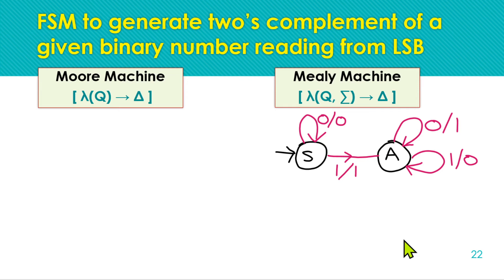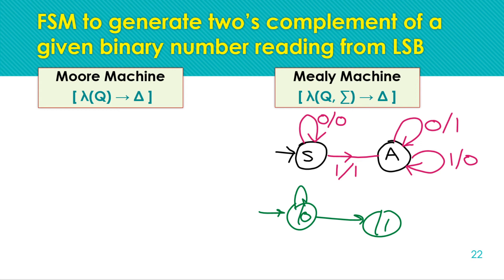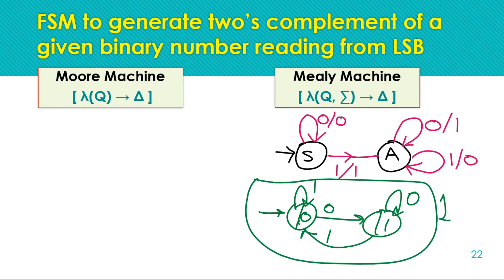Now constructing the Moore machine. The one's complement Moore machine from the last lecture had one state generating zero output and another state generating one — for all ones there was a self-loop. We need to generate output one for input zero and zero for input one. This is the one's complement Moore machine, which we will adapt to build the two's complement Moore machine.